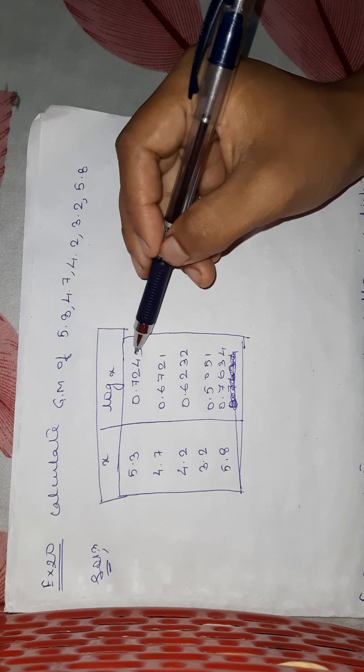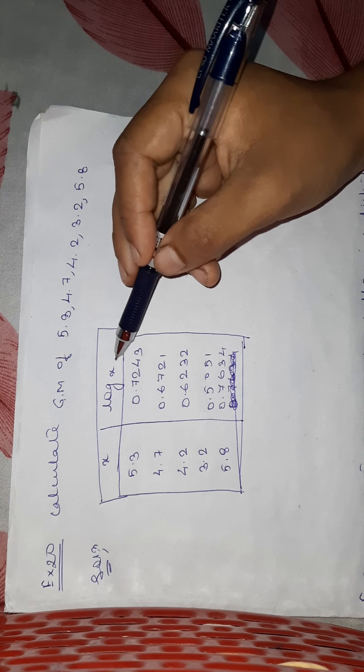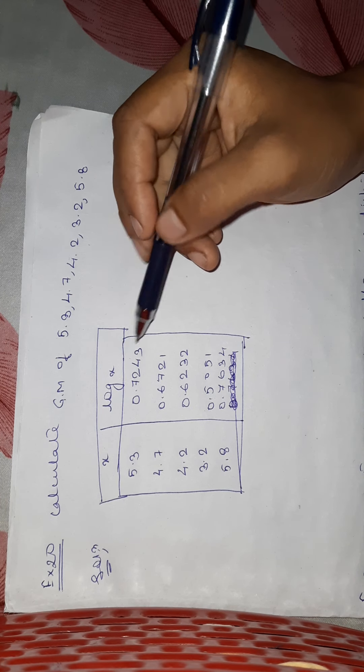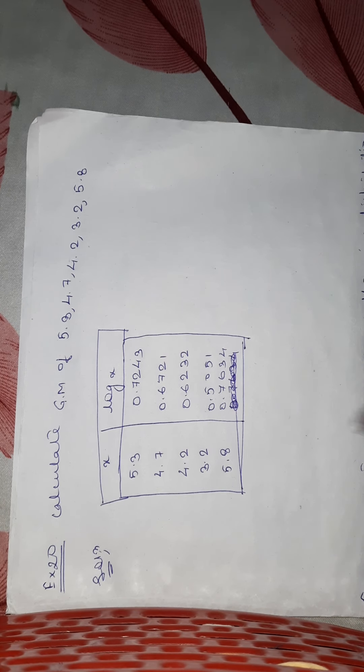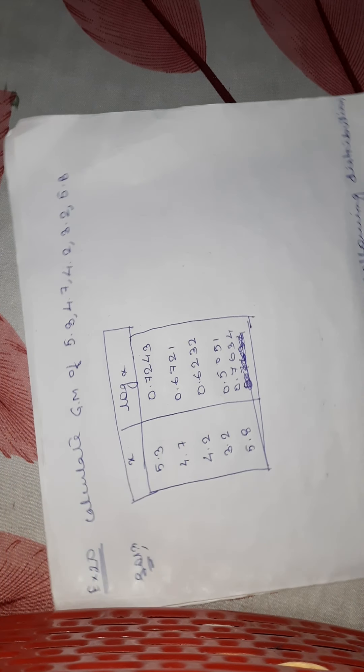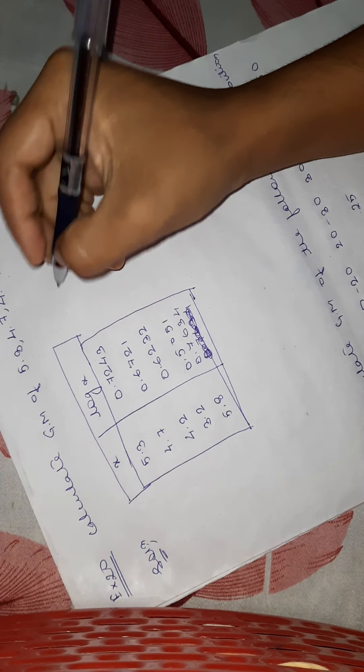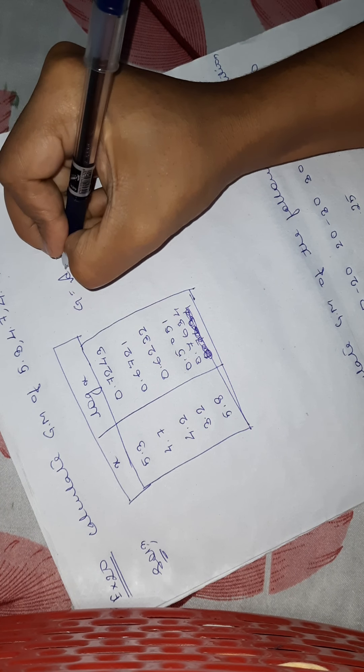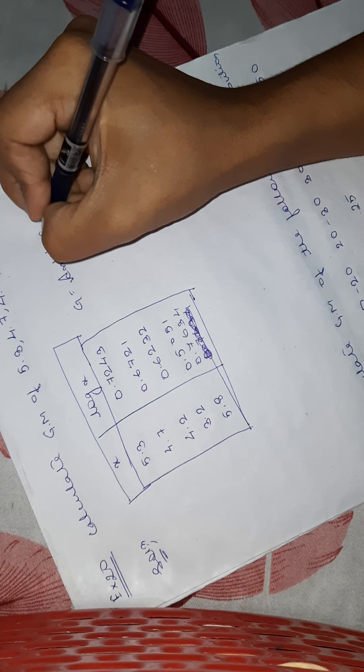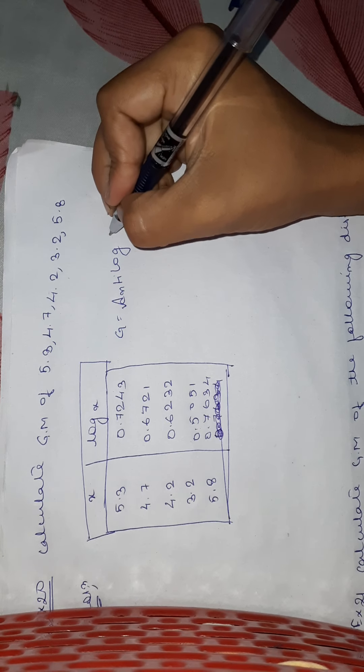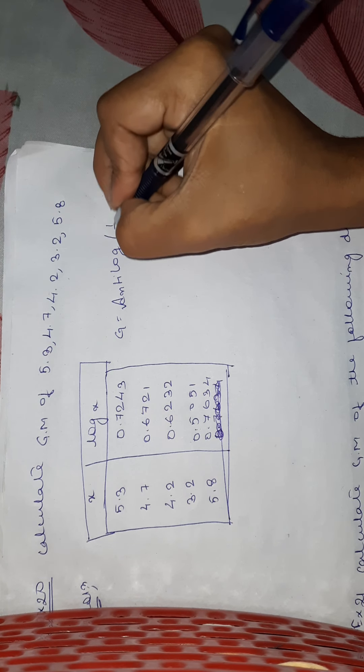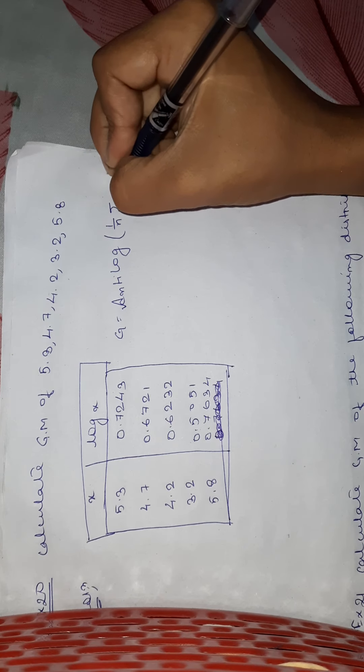I have already given you the values of this log. And now I will apply the formula. The formula for geometric mean using log is antilog of 1 by n summation log x.